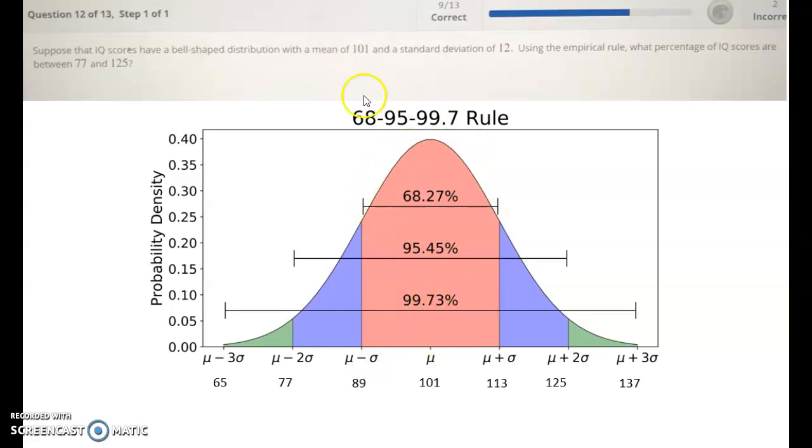In other words, two-thirds of the people, 68%, 68.27% if you want to be more exact, of people have an IQ in between 89 and 113. Or if we want to go between 77 and 125, we would get this entire area under the curve, which would be 95.45%, or often we shorten that to 95%.